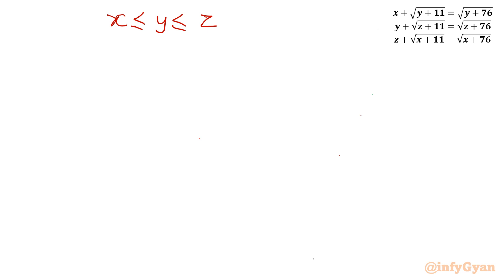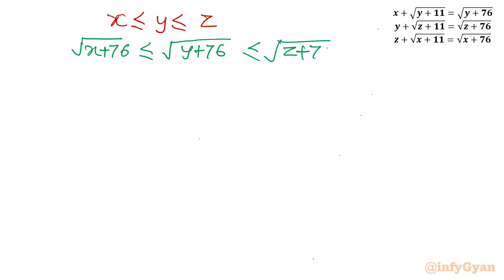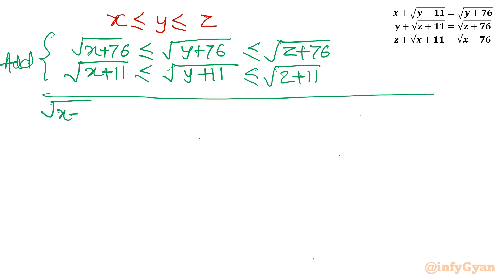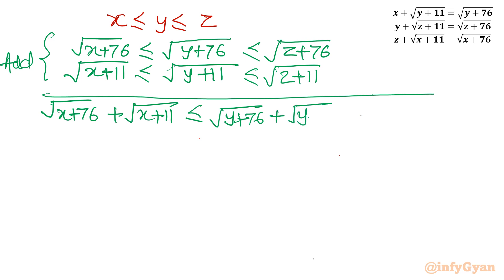Because we know that the square root function is a monotonic increasing function, we can write: square root of (x + 76) ≤ square root of (y + 76) ≤ square root of (z + 76). Similarly for the +11 terms: square root of (x + 11) ≤ square root of (y + 11) ≤ square root of (z + 11). Adding these two inequalities gives: square root of (x + 76) plus square root of (x + 11) ≤ square root of (y + 76) plus square root of (y + 11) ≤ square root of (z + 76) plus square root of (z + 11).